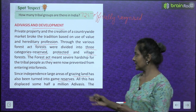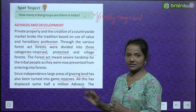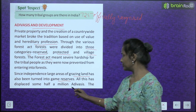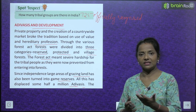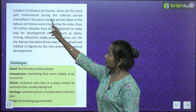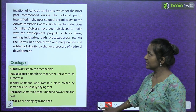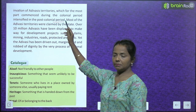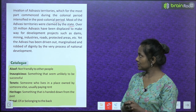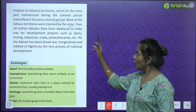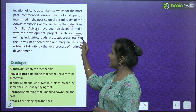Since independence, large areas of grazing land have been turned into game reserves. All this has displaced some half a million Adivasis. The invasion of Adivasi territories, which for the most part commenced during the colonial period, intensified in the post-colonial period. Most of the Adivasi territories were claimed by the state.